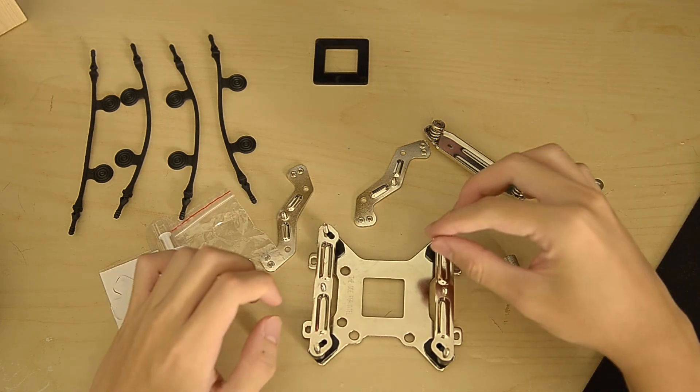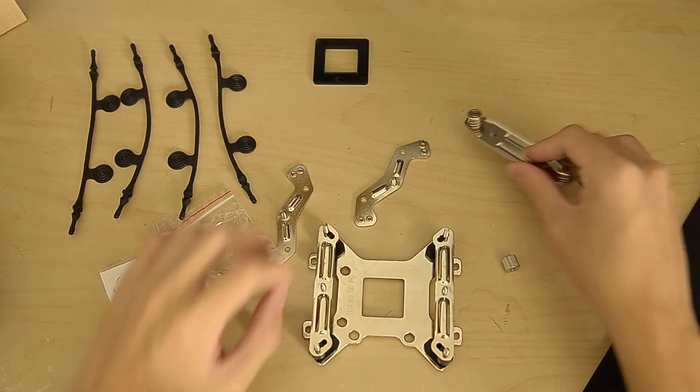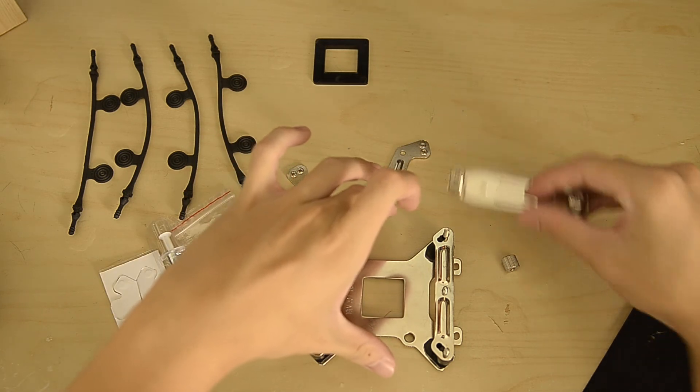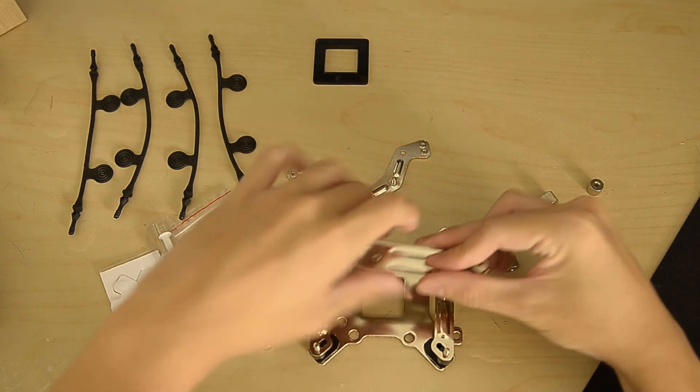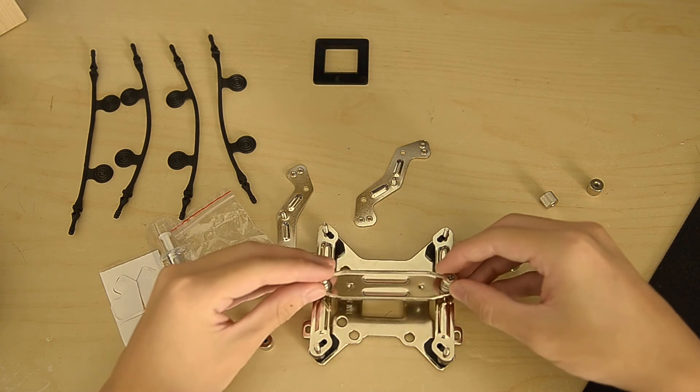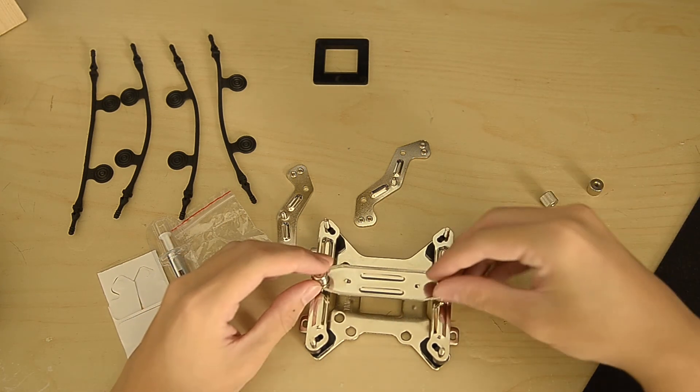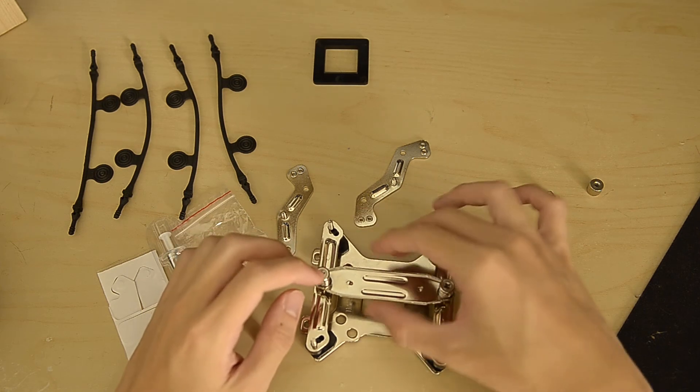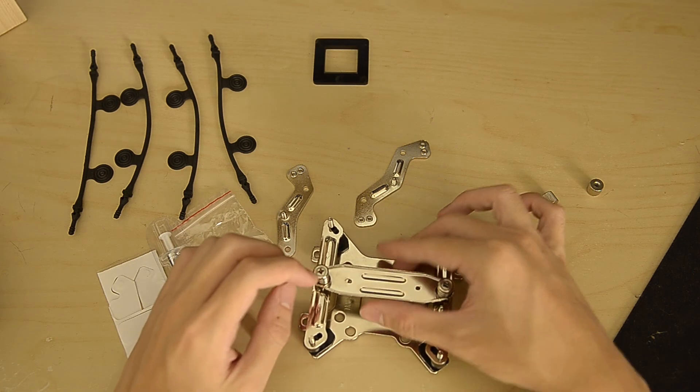Afterwards you put the CPU cooler on top, this goes in. You see these two screws here on top of the CPU cooler, you go like that and then you screw down. This will apply push the CPU cooler down to apply the pressure onto the CPU itself.